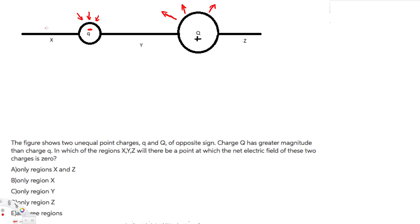Let's consider region X. Since this is the negative charge, the field line here is going in this direction, and for the positive charge the field line is going in this direction. So there's a possibility for them to cancel each other, meaning the net electric field can be zero at this point. There's a possibility.